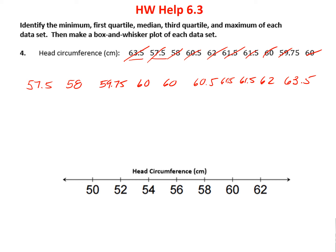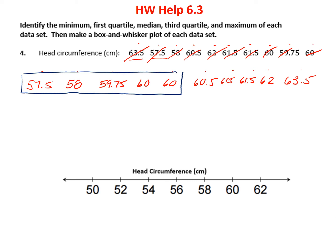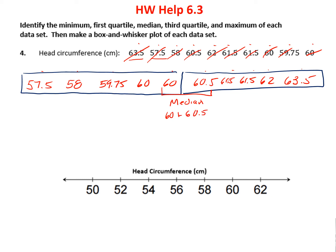Let's count to make sure we got them all: 1, 2, 3, 4, 5, 6, 7, 8, 9, 10 of them. So 10 divides evenly into 5 and 5. Because it's even, I'm going to have a median between two numbers — those two middle numbers are 60 and 60.5. So my median is 60 plus 60.5 divided by 2, which is 60.25. That's going to be my median.